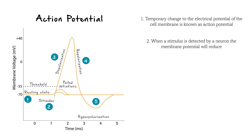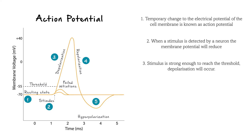When a stimulus is detected by a neuron, it causes sodium channels in the cell membrane to open. Because there are more sodium ions outside the neuron than inside, the charge is then reduced. If the stimulus is strong enough, sodium channels will open to allow more sodium ions to move into the neuron and change the resting potential to a threshold of negative 55 millivolts. This will result in the cell membrane becoming more positive inside the cell than outside, moving beyond a zero millivolt potential.